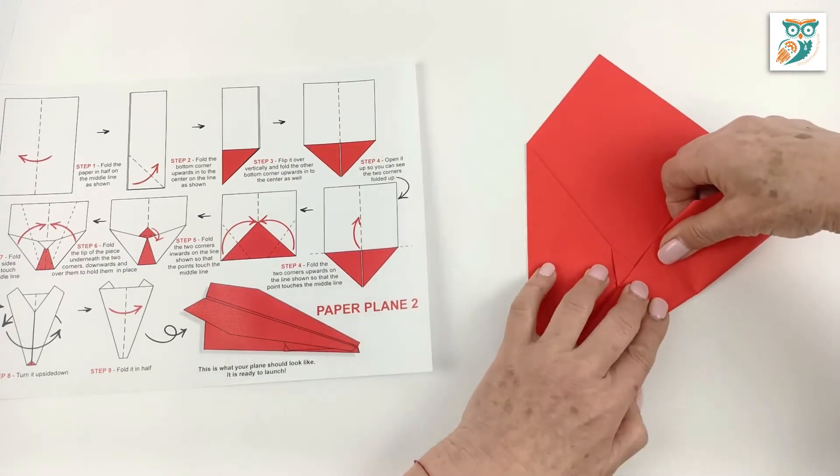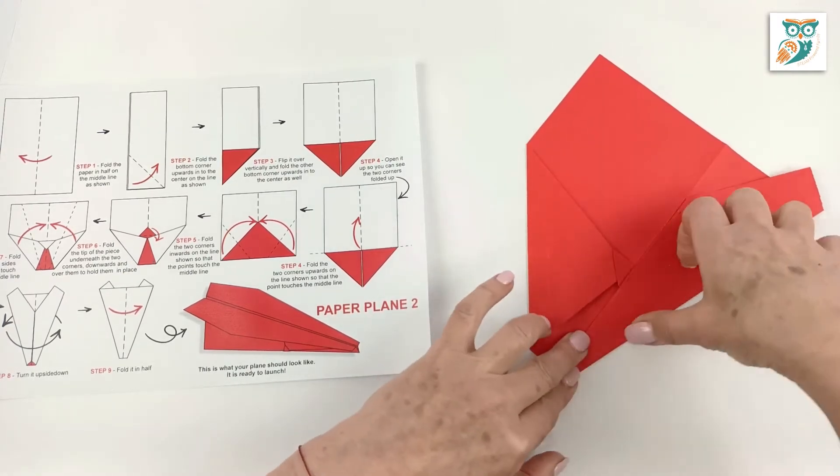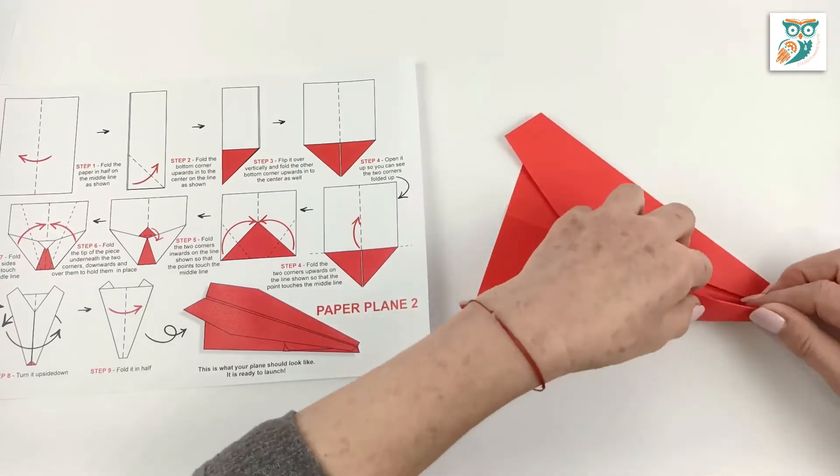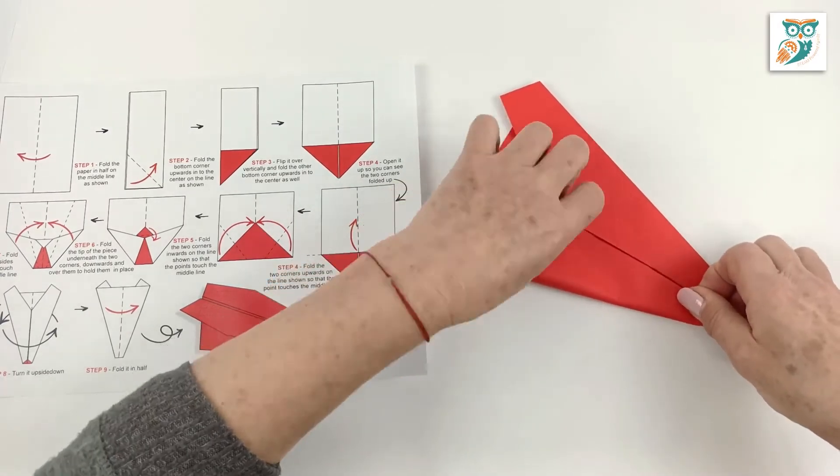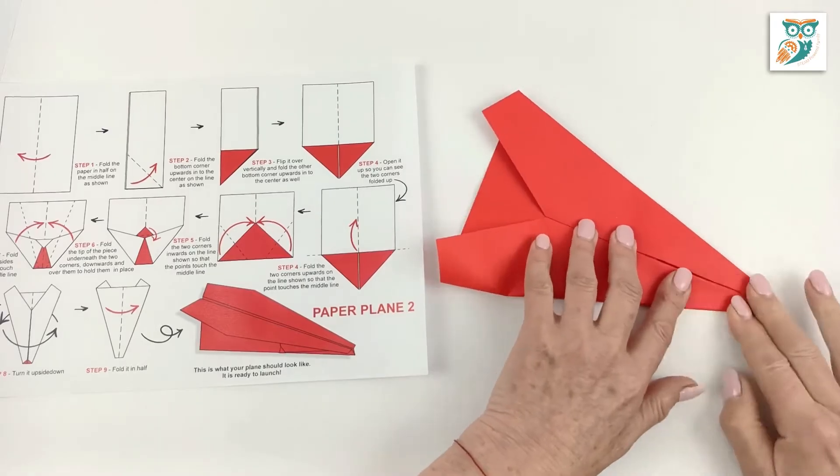Now each side, grab the side and bring it up. We're going to grab the other side and fold it up along the center line there. Look at those nice crisp edges.